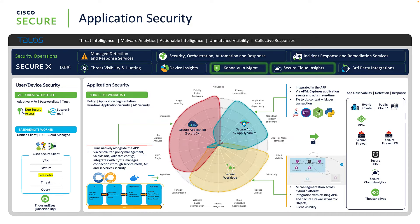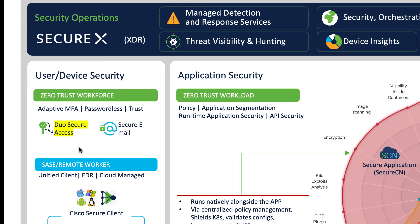Depending on what kind of applications customers have today, one of the solutions should fit — or sometimes it's a combination. This is quite common, as large customers often have hundreds of applications, some acquired and some developed themselves. Another important component is securing user access to applications, which is where Duo Secure Access comes in, safeguarding users, devices, and applications throughout the stack.